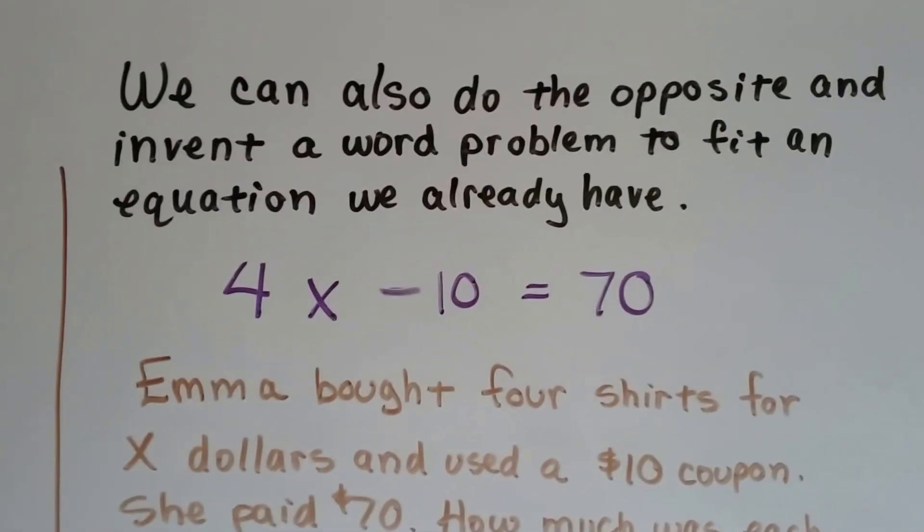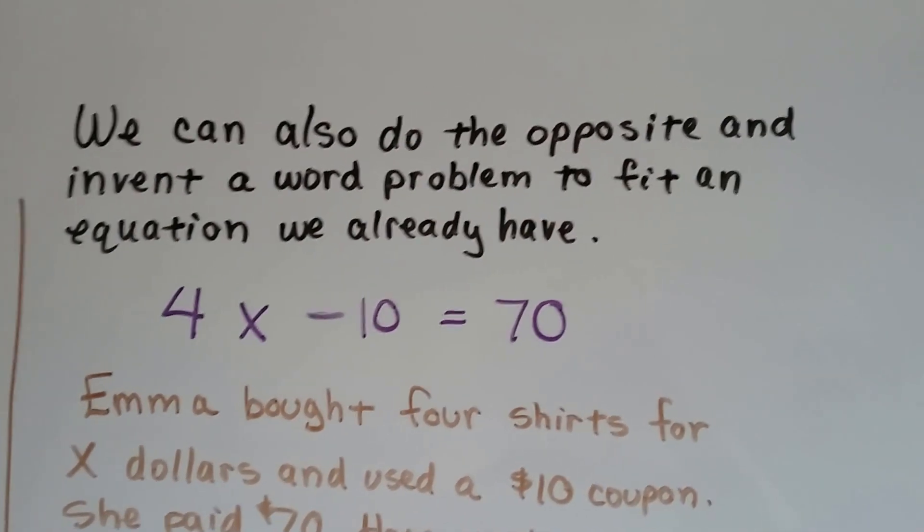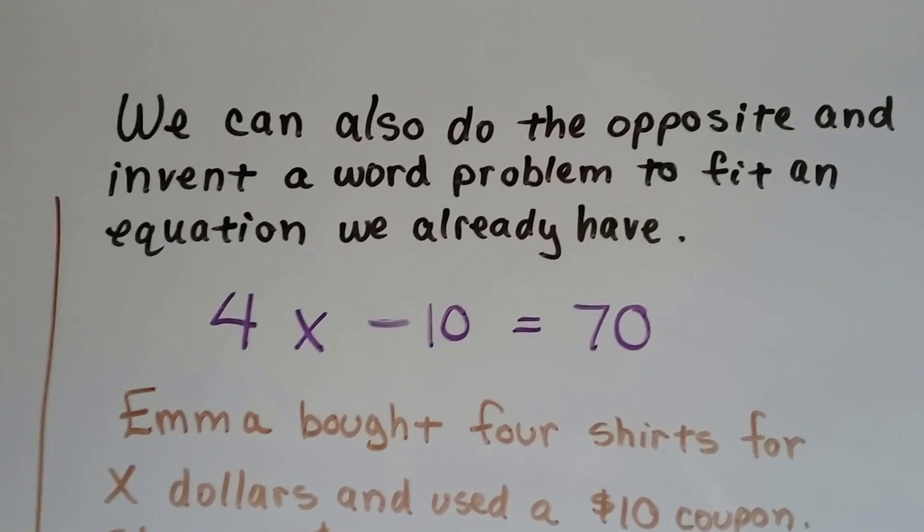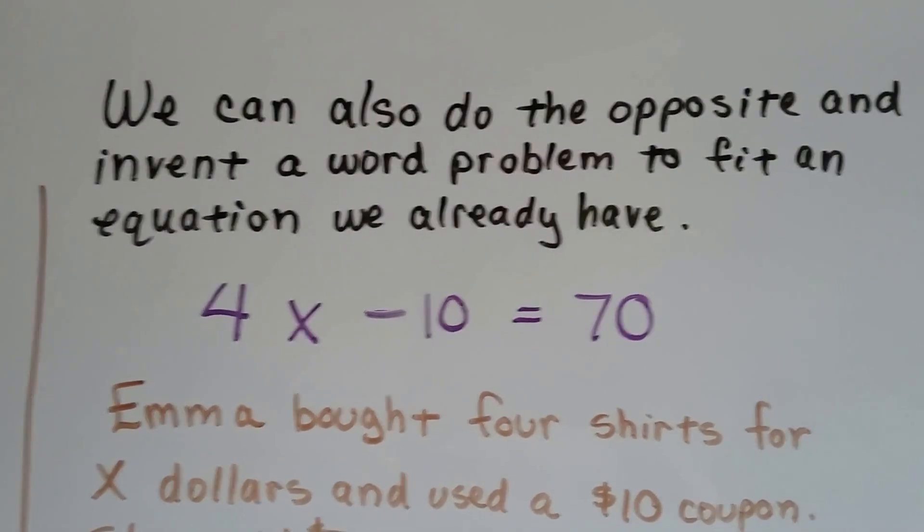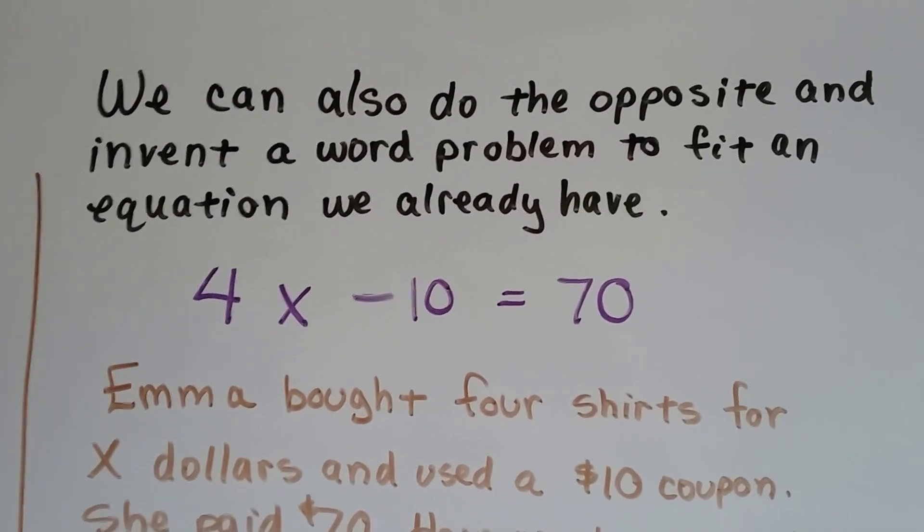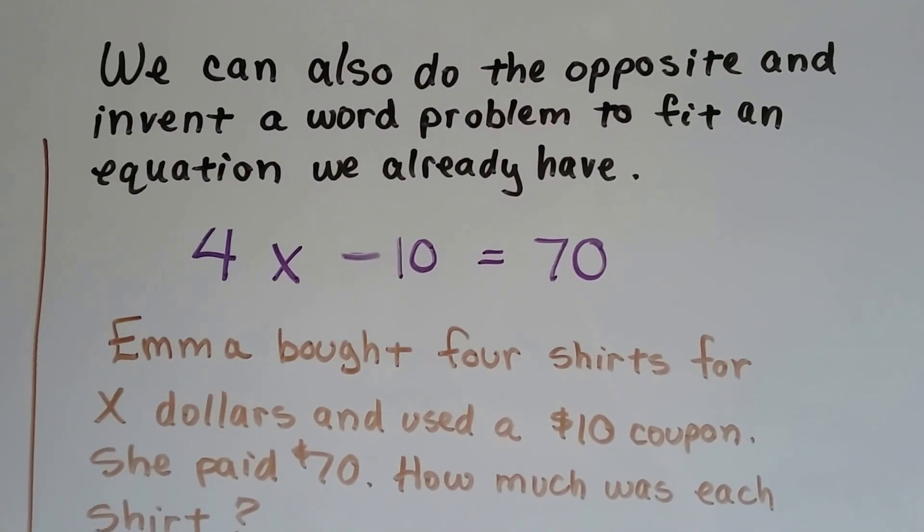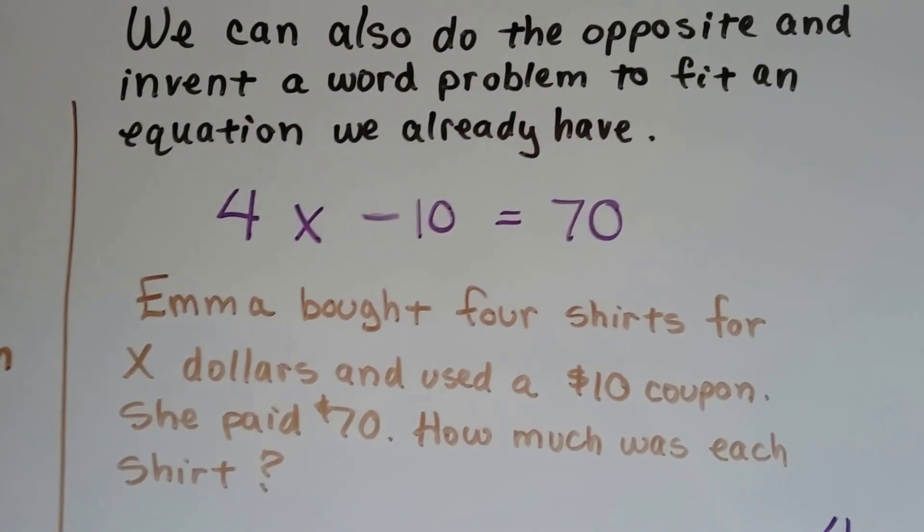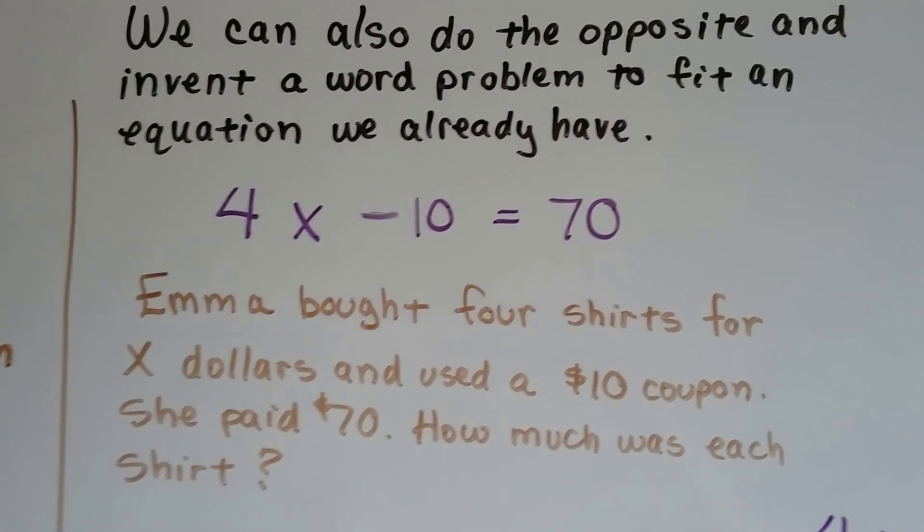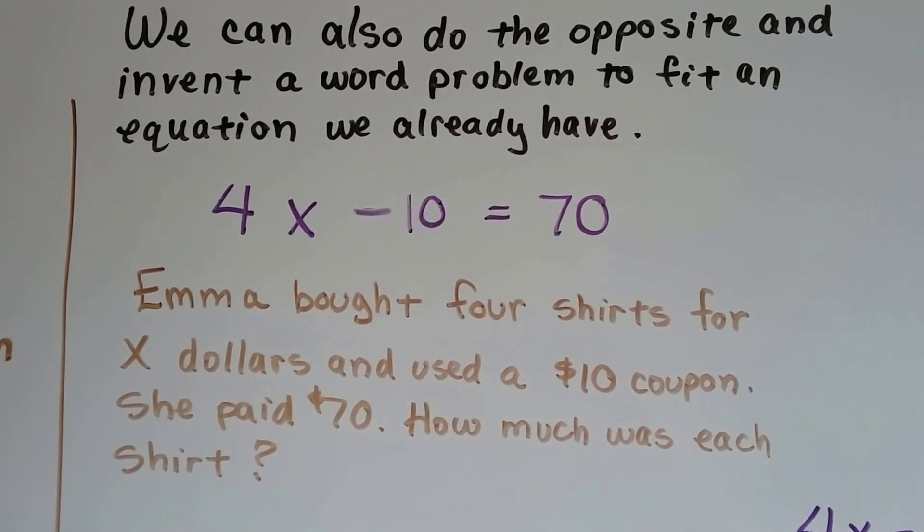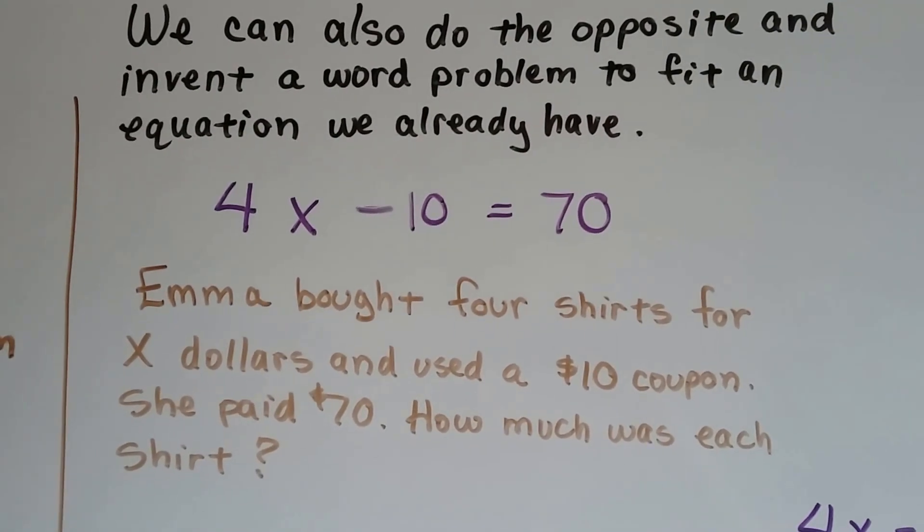Well, we can also do the opposite and invent a word problem to fit an equation we already have. If we have 4x minus 10 equals 70, we can invent any story we want to fit the 4x minus 10 equals 70. I came up with: Emma bought 4 shirts for x dollars and used a $10 coupon, and she paid $70. How much was each shirt?